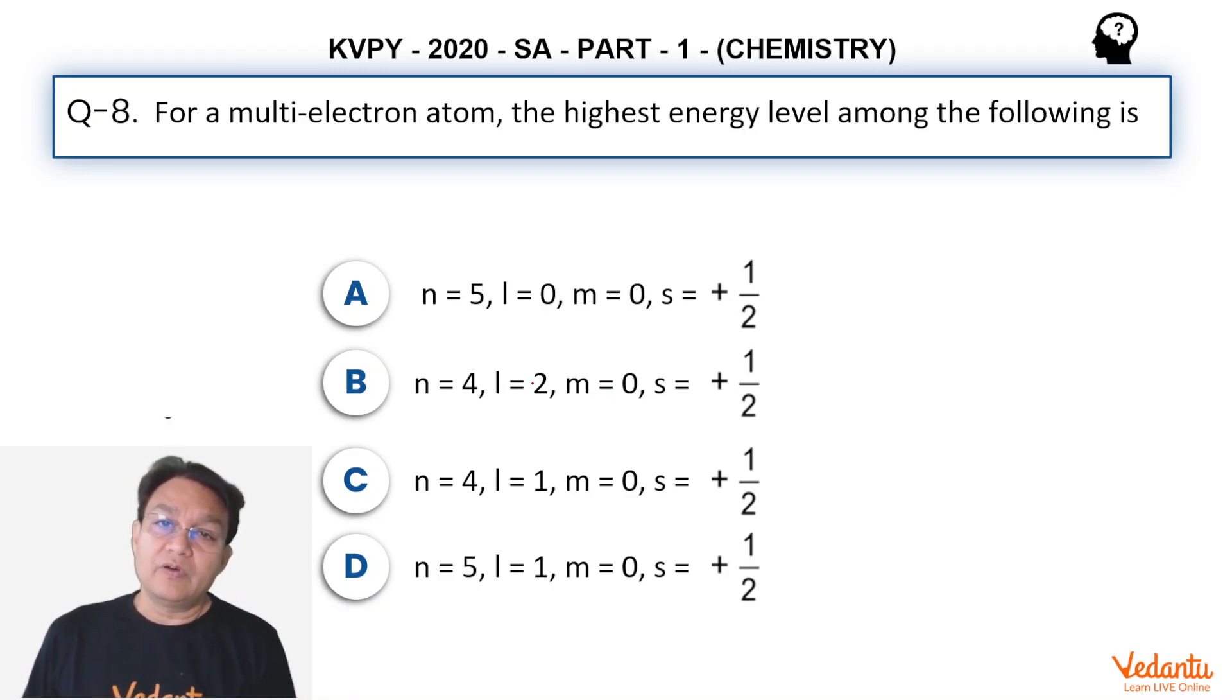Here is a question. For a multi-electron atom, the highest energy level among the following is belonging to atomic structure, electronic configuration.